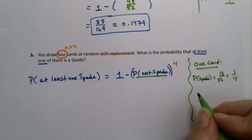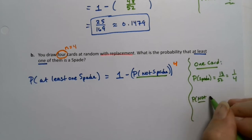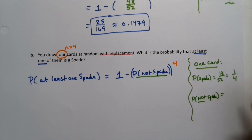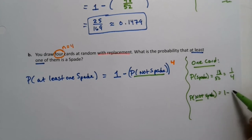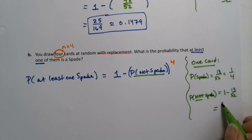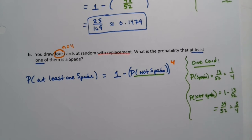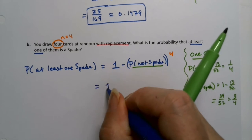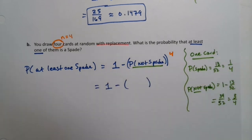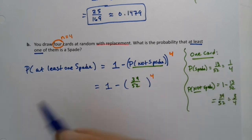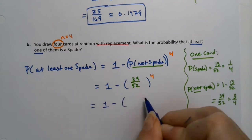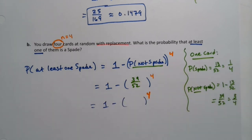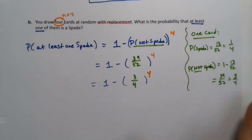For one card, the probability of a spade is 13 out of 52, or one-fourth. The probability of not getting a spade is the complement: one minus 13/52, which equals 39/52, or equivalently three-fourths. I'll use three-fourths since it's easier to work with. So the expression is one minus 39/52 to the fourth, which is the same as one minus three-fourths to the fourth — either way they give the same answer.